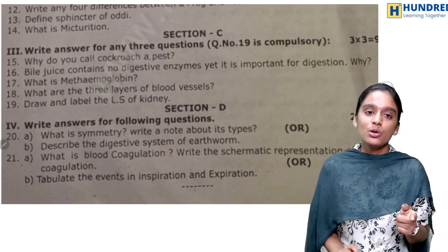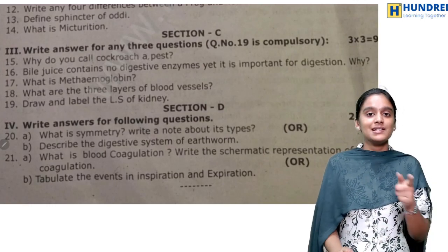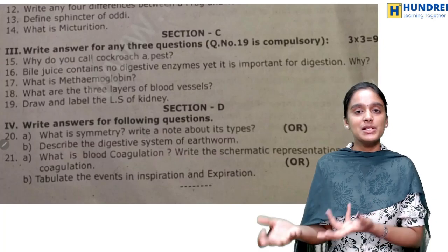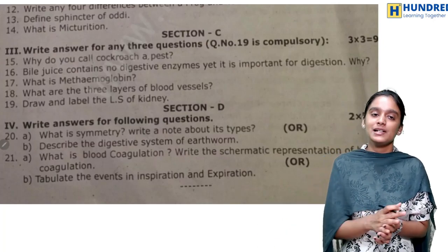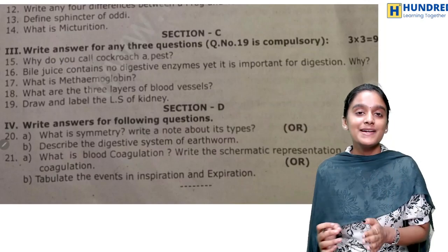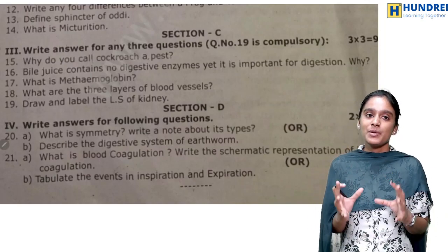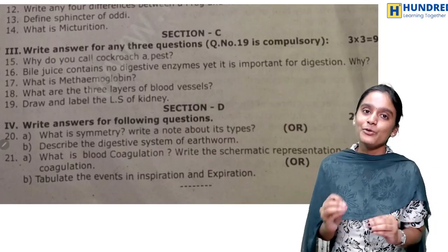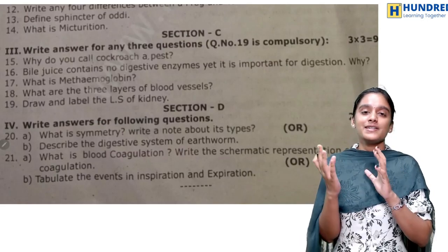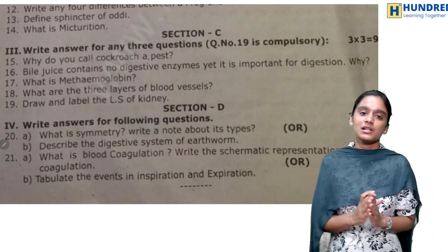Section C questions: why do you call cockroach a pest? Bile juice contains no digestive enzymes, yet it is important for digestion — because it helps in the emulsification of fat. What is methemoglobin? What are the three layers of blood vessels? Draw and label the LS of kidney. You can see there is a diagrammatic question, and that diagram question is your compulsory question.